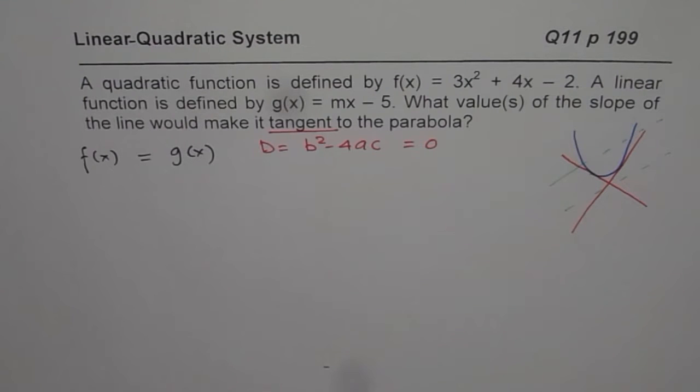So that becomes a condition for tangent of these two functions. We will first equate the two functions and then find the value of m for which the discriminant is 0, so that we have one solution. At this stage, you can pause the video. You have understood how to solve it. Solve and then check your answer.